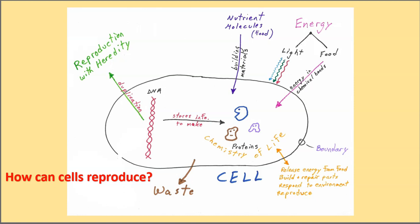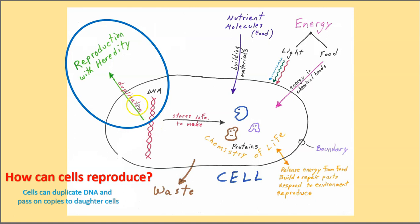How can cells reproduce? Well, because DNA can be duplicated and passed on to two daughter cells. So the parent cell can duplicate this DNA and then divide into two cells. Each cell getting a copy of the DNA, which stores the recipes to build all the key players here, the proteins.